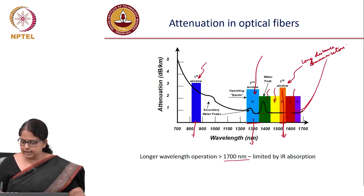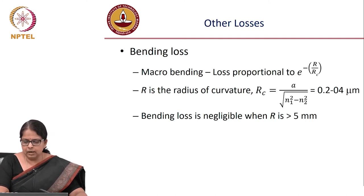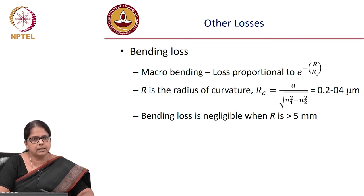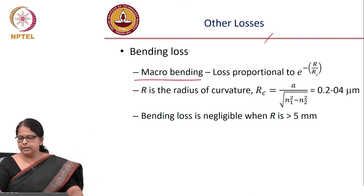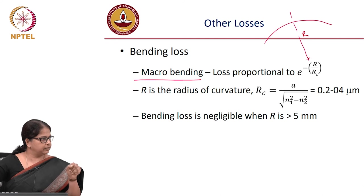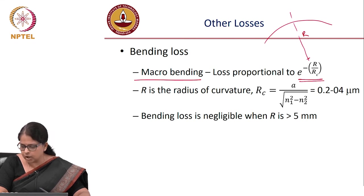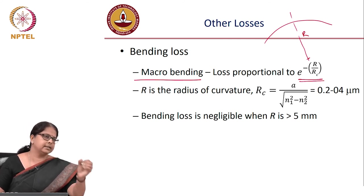Beyond 1700 nm, loss is limited by infrared absorption. For macro bending loss, if the radius of curvature is R, the bending loss follows: loss ∝ exp(−R/RC), where RC = A/√(n1²−n2). This shows that bending loss depends on the numerical aperture — larger acceptance angle determines how much bending loss occurs.